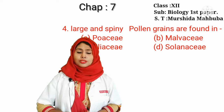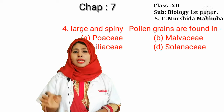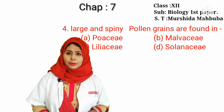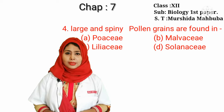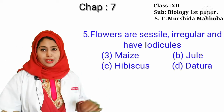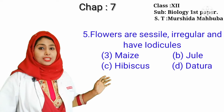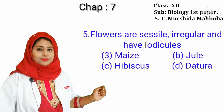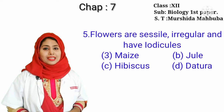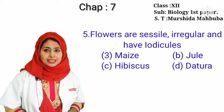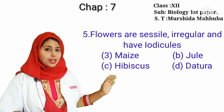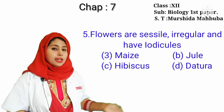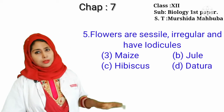In chapter 7, only two families are covered: Poaceae and Malvaceae. If you memorize their characteristics, you can easily answer this question. Large and spiny pollen grains are found in the Malvaceae family. Our next question is: flowers are sessile, irregular, and have lodicules in which plant — maize, jute, hibiscus, or Datura?